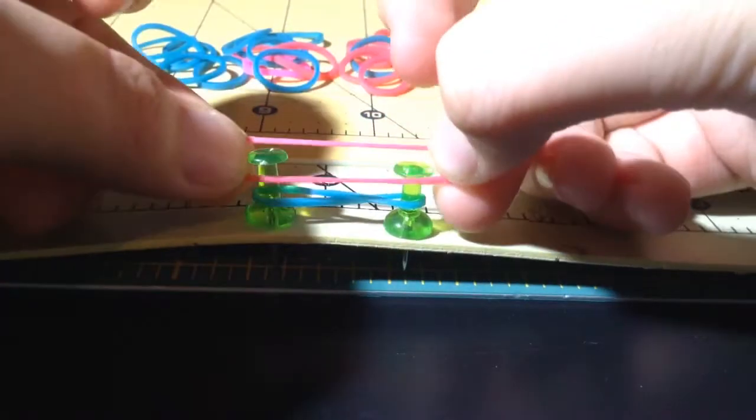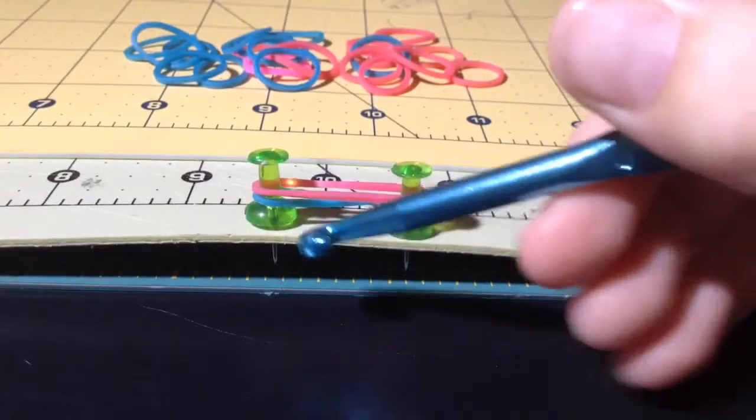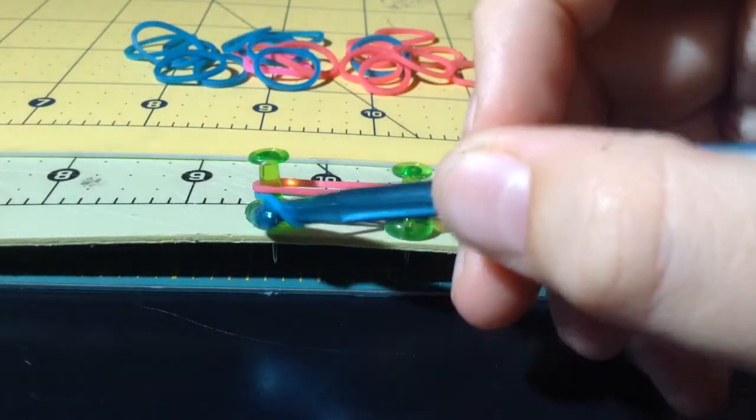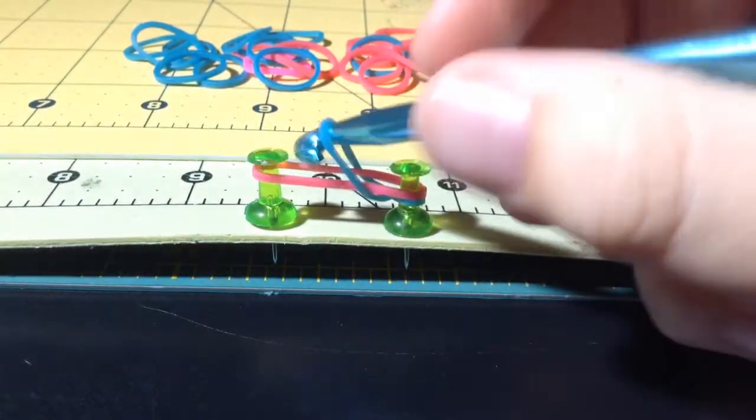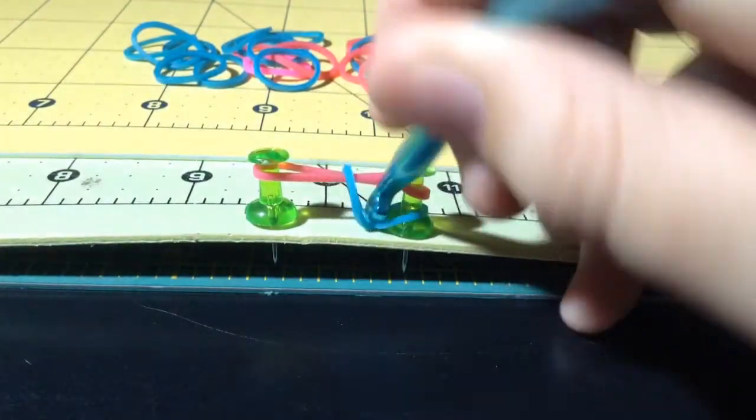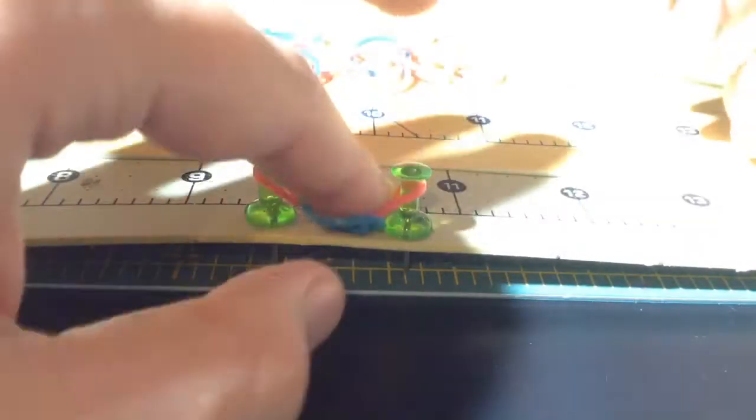Then you're going to take one that you want to be your next color. Loop it on and then be sure to push it down. Then you're going to take your tool or finger and get under it, pull it up, let it go, and then do the same thing on this side. And you can also use your fingers like that.